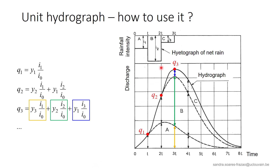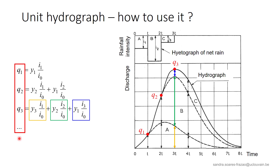For example, to calculate Q3, we add three quantities, where the y values are the ordinates of the unit hydrograph at different times. So, when using the method to construct a hydrograph following a given arbitrary rainfall, the unknowns of the problem are the ordinates Q of the resulting hydrograph, highlighted here in red.